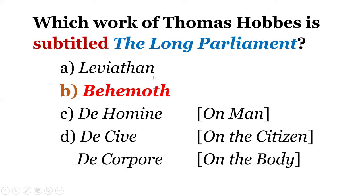Let's also focus on the other works by Thomas Hobbes. We have De Homine, which means 'on man.' Then De Cive, which means 'on the citizen.' There is also another work called De Corpore, which means 'on the body.'